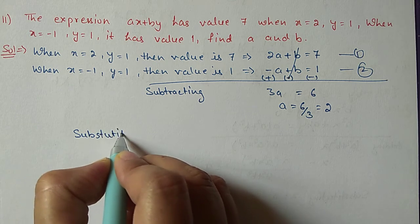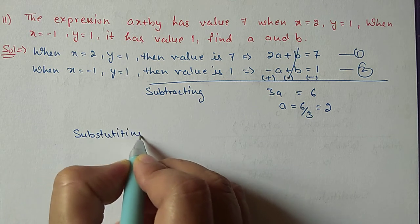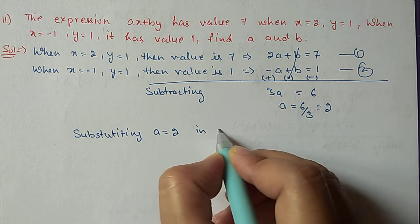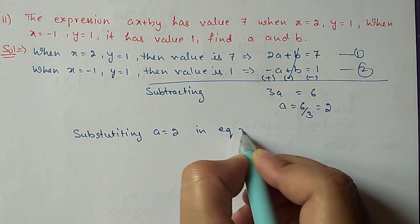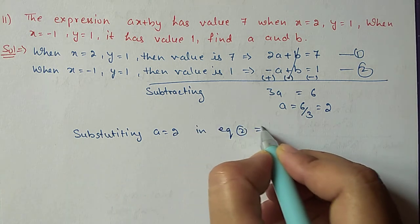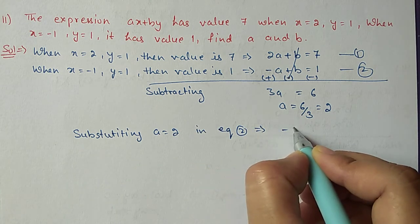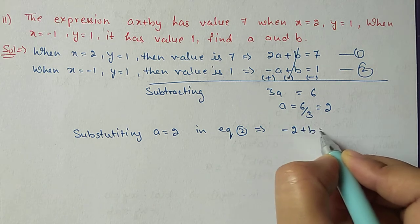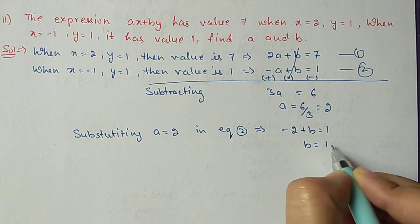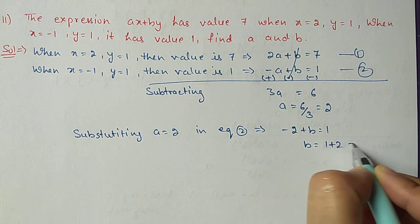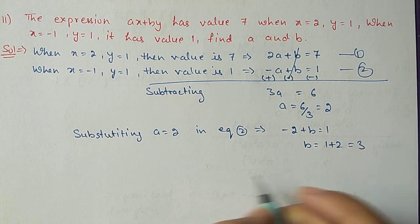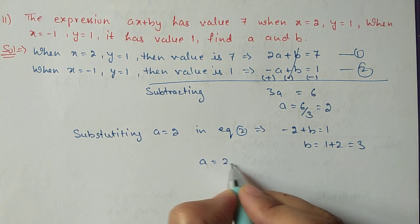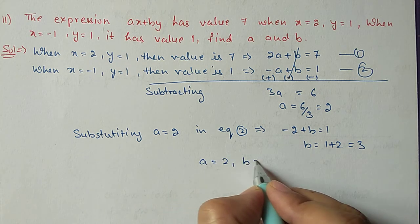We substitute A equal to 2 into equation 2: minus 2 plus B equal to 1, so B equals 1 plus 2 equal to 3. So we got A is 2 and B is 3.